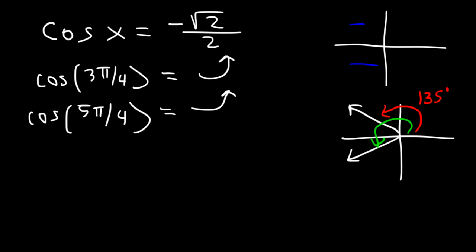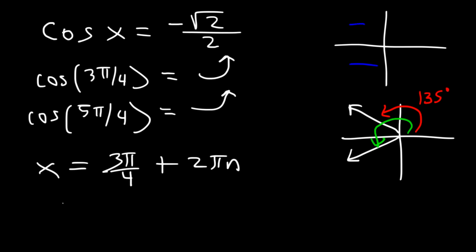So we can write the solution as: x = 3π/4 + 2πn, or x = 5π/4 + 2πn, where n is any integer.